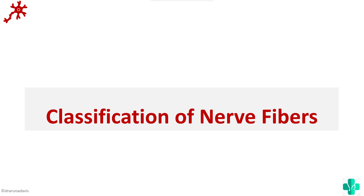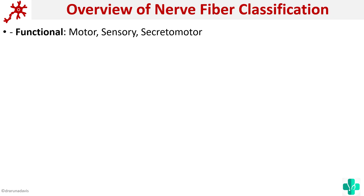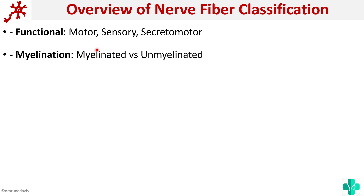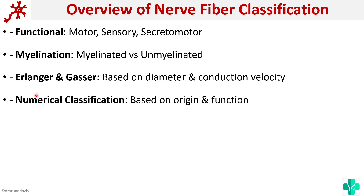Hi all, in this video we are going to see about the classification of nerve fibers. This has been asked multiple times in university questions as a brief answer question. There are many ways to classify nerve fibers: functionally based on what the fiber does, it can be classified into motor, sensory, or secretomotor. Based on myelination, it can be divided into myelinated or unmyelinated. Two important classifications are the Erlanger and Gasser classification and the numerical classification, both of which we will cover here.